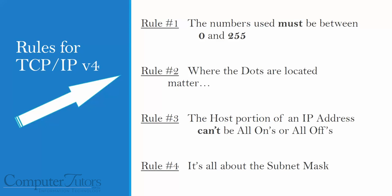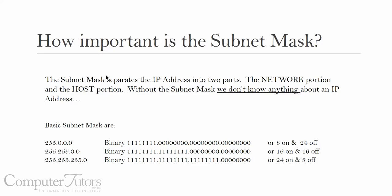Right now, we're going to talk about rule number four — it's all about the subnet mask. When we look at an IP address, the subnet mask separates the IP address into two parts: the network portion and the computer or host portion. Without the subnet mask, we really don't know anything about the type of IP address we have or how many computers are on the network. Now, 255 is all-ons — in binary, that's eight on-bits. A zero would be eight off-bits.